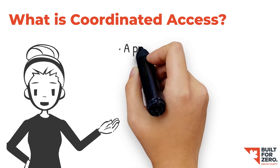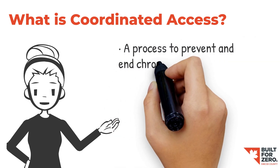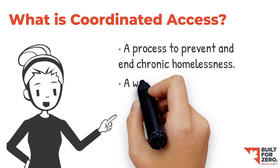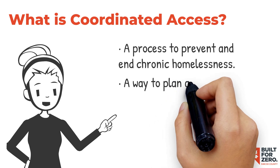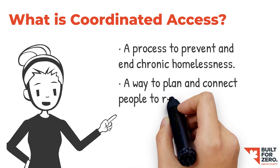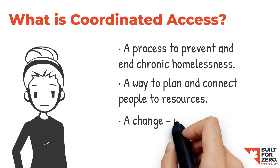A coordinated access system is a process dedicated to preventing and ending chronic homelessness — a way of service planning and connecting people to resources based on a supportive workflow.